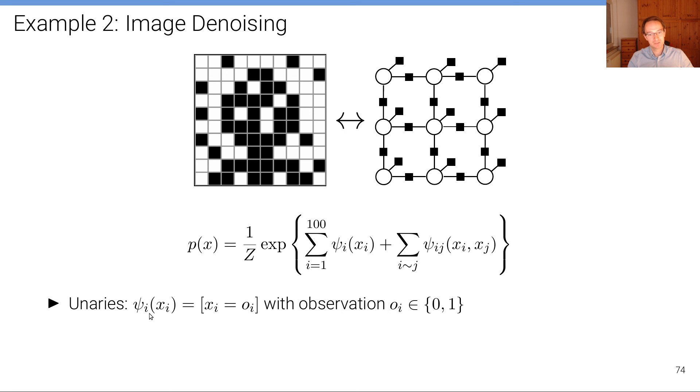The unaries are the same as before, but now we have the pairwise potentials that are defined as such: they're defined such that if on two adjacent—so this means adjacent neighboring sites—if for two adjacent pixels the state, the inferred state is the same, xi equals xj, then we have a 1, otherwise we have a 0, and we multiply this with alpha, which is the strength of this regularizer that is a hyperparameter of the model.